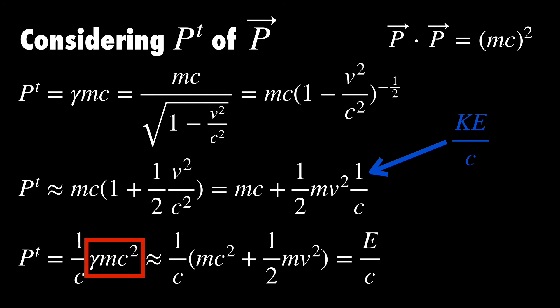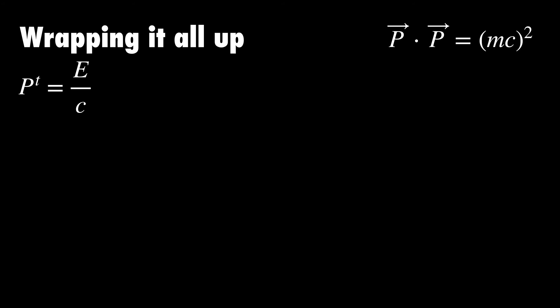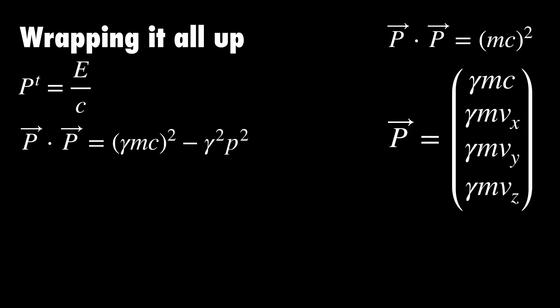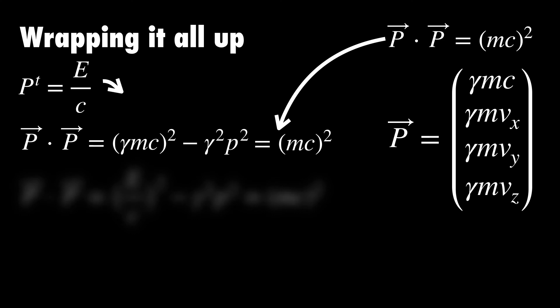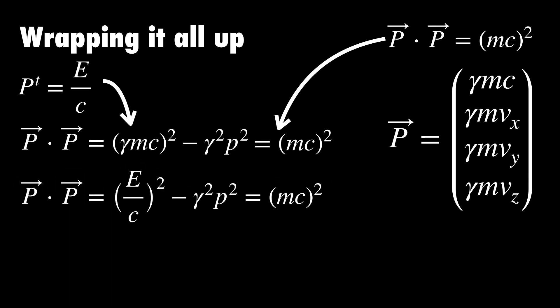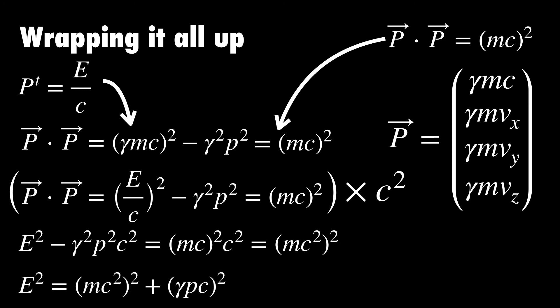But we're going to keep going until we reach the general energy equation as we wrap up everything we've been doing together. So we now know that the time component of momentum is E/c, and using our definition of four-momentum, we can write an inner product. We also know that that inner product is always equal to a constant, and that we can replace the time component of it with E/c. Looking at this, we kind of want to get the E on its own, so let's just multiply both sides by c². Which leads to E² minus γ²p²c² is equal to (mc²)c², which we can rewrite as (mc²)². Then let's just put the E² on its own, and we have it!